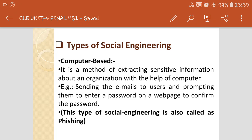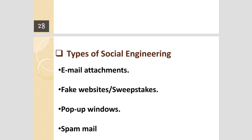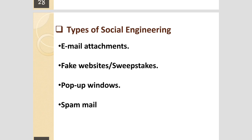This type of social engineering is also called phishing. Computer-based social engineering is categorized under the following types: email attachment, fake website or swift text, pop-up windows, and spam mail.